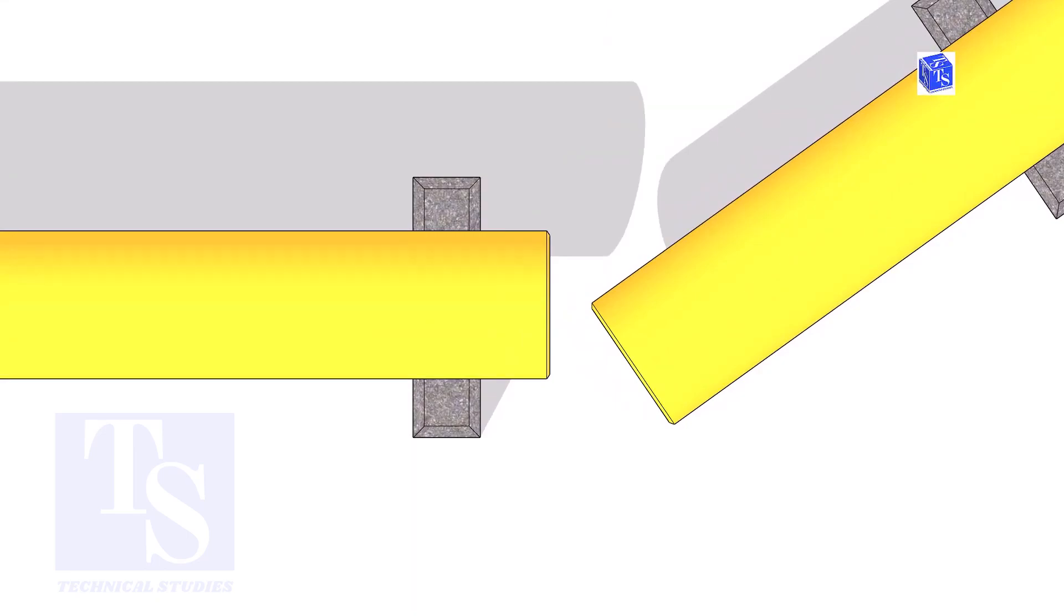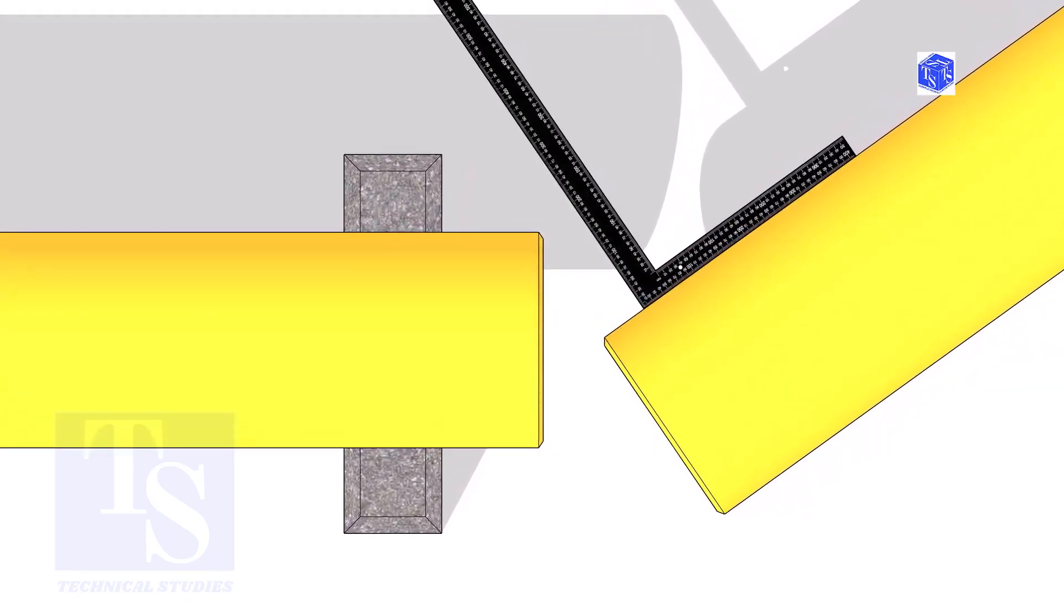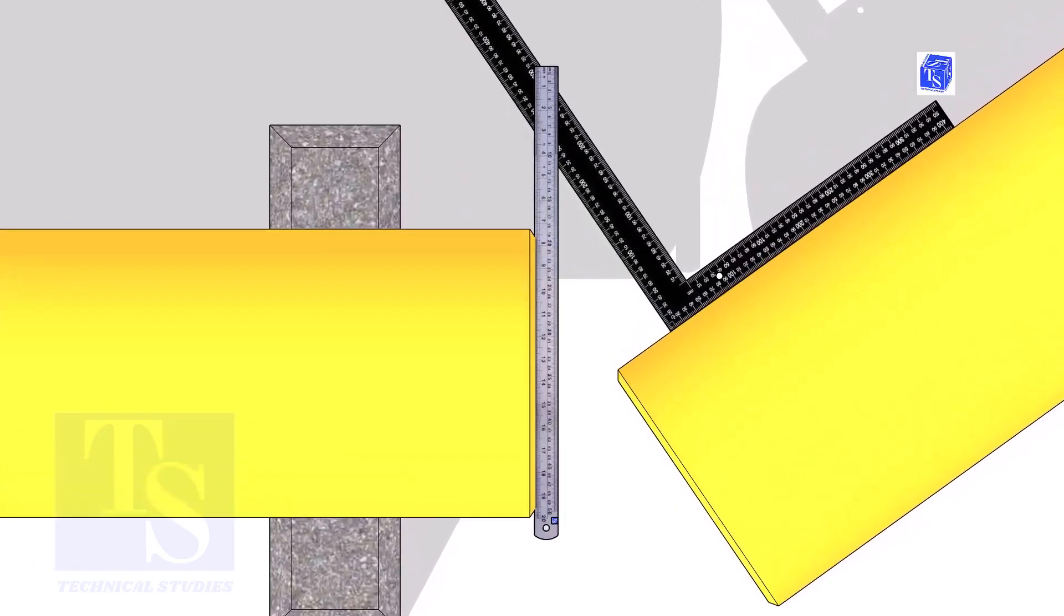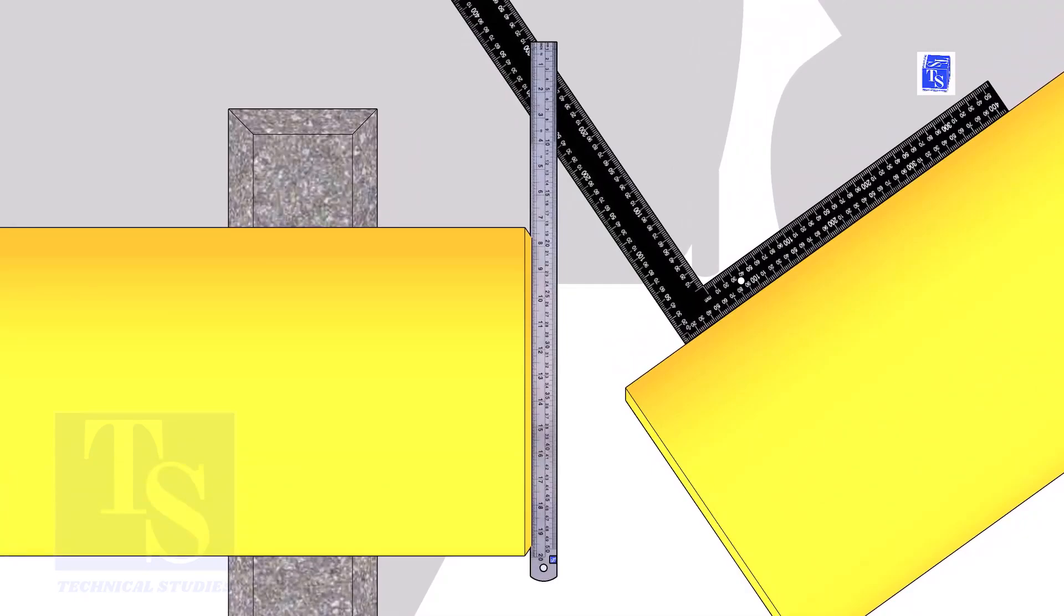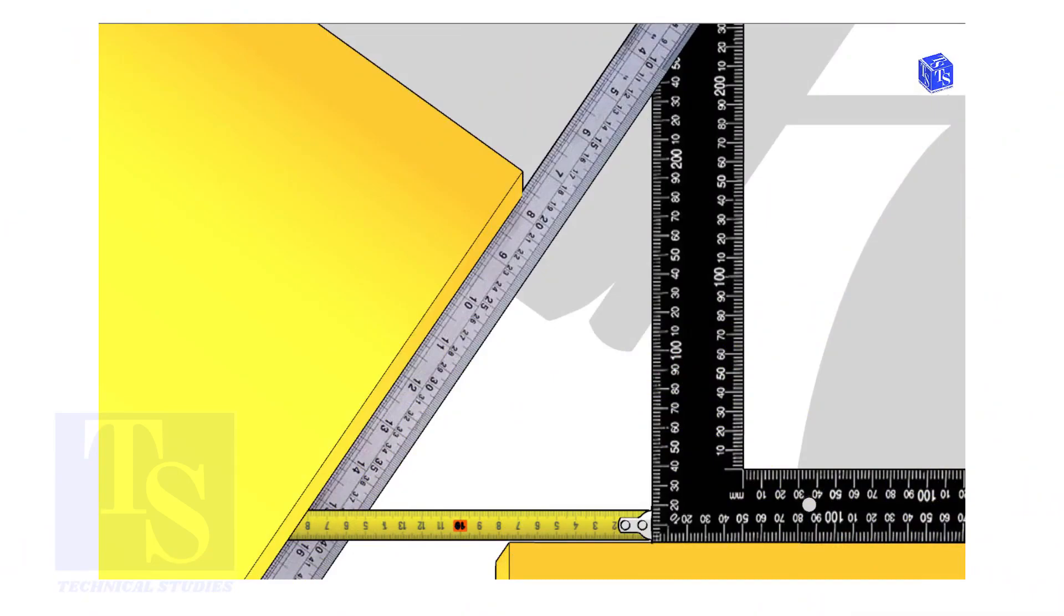Hold a right angle on the pipe as shown. Hold a scale on the other pipe as shown. Measure and note down the dimensions of the triangle.